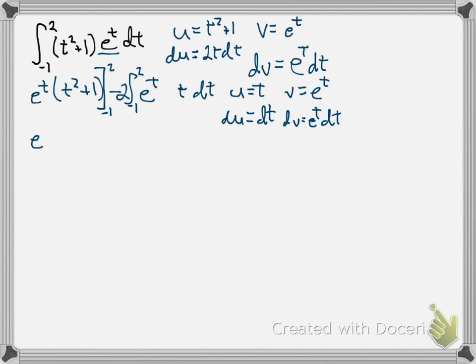So, we have e to the t times t squared plus 1, and we will be using these limits, negative 1 to 2, minus 2. Now, I'm going to use a set of parentheses here for this anti-derivative. So, we have uv, which is t e to the t, minus the integral of vdu, which is the integral of e to the t dt, and this integral is, again, from negative 1 to 2.